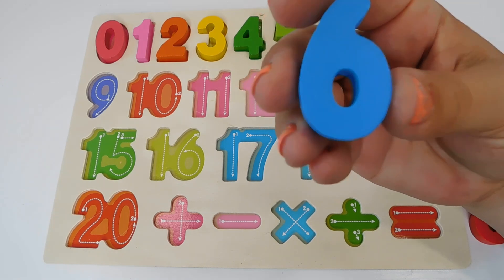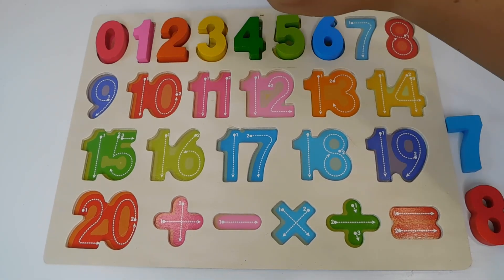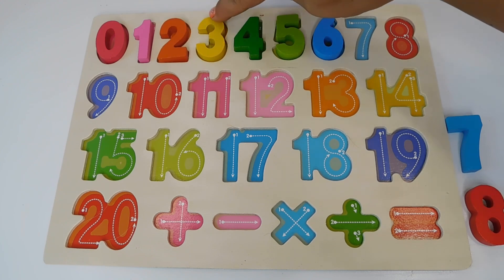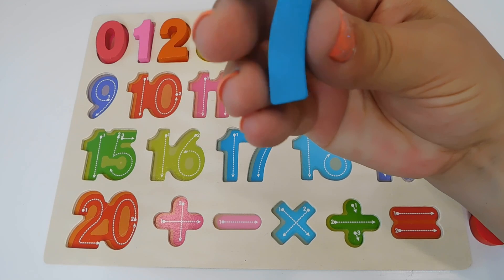Our next number is blue and this is a 6. Blue 6. It goes here. 0, 1, 2, 3, 4, 5 and 6.